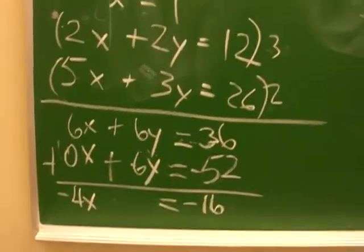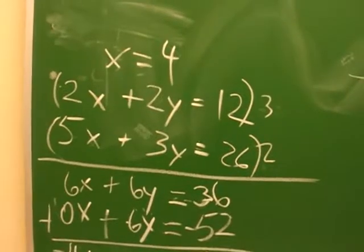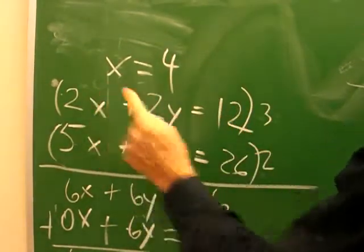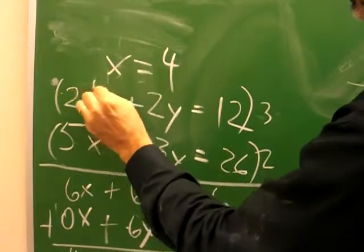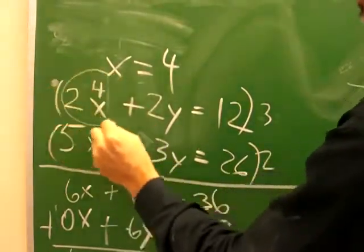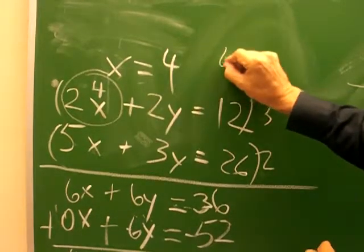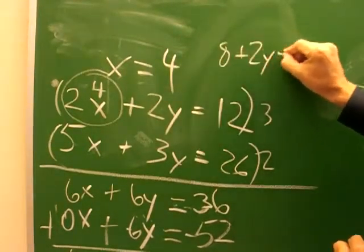We just have to put it upstairs. If this becomes 4 here, this means this is 8 plus 2y is 12. 8 plus 2y equals 12.